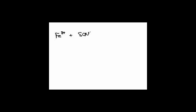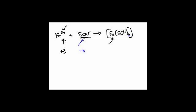If I have Fe³⁺ and I react it with thiocyanate, the charge of iron is three; double the charge gives six. So this will be Fe(SCN)₆, with brackets around it. Iron has a charge of plus three; six thiocyanates each have a charge of minus one, so as a group that's negative six. Positive three plus negative six gives a charge of negative three.